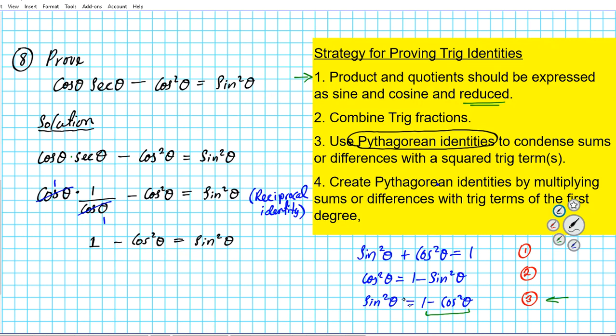Okay, now we have form three exactly: one minus cosine squared theta. So what does form three of this Pythagorean identity tell us one minus cosine squared theta can be substituted with? We can clearly see that we can substitute it with sine squared theta.